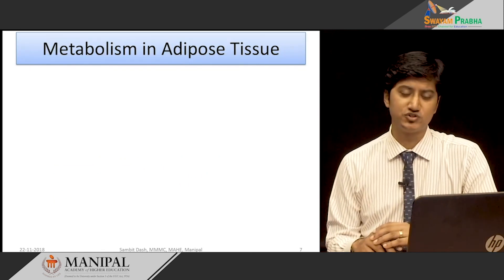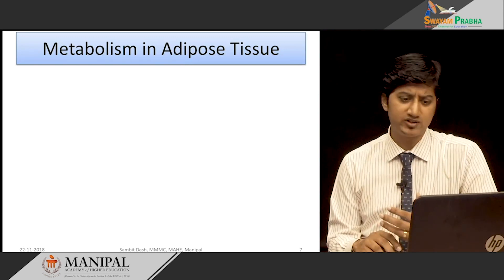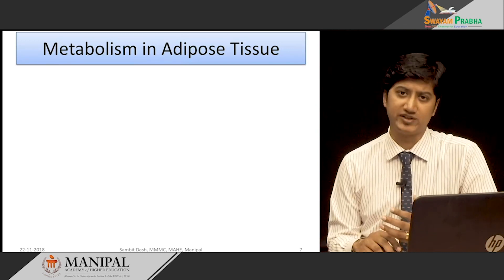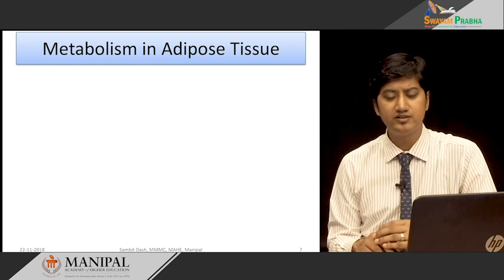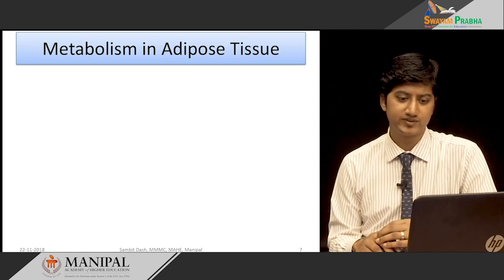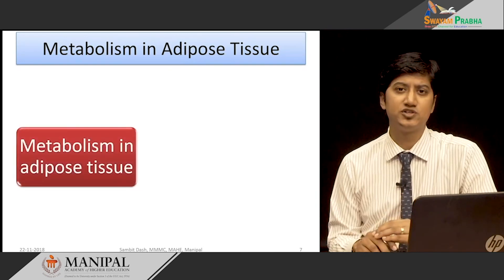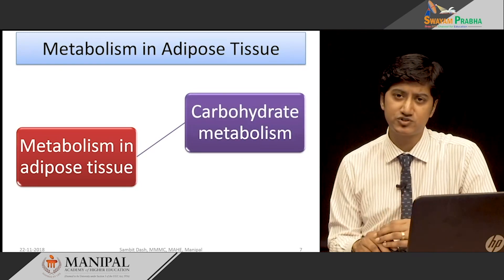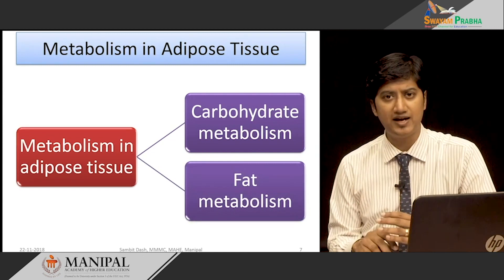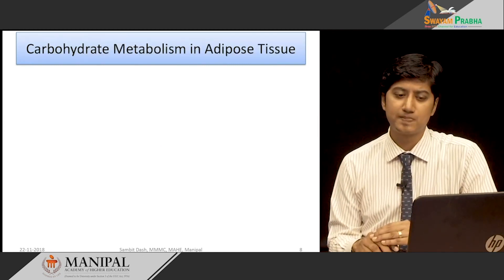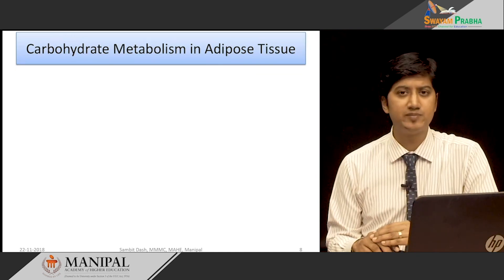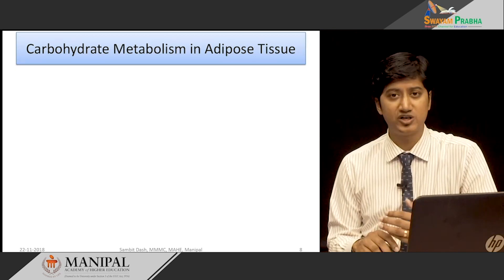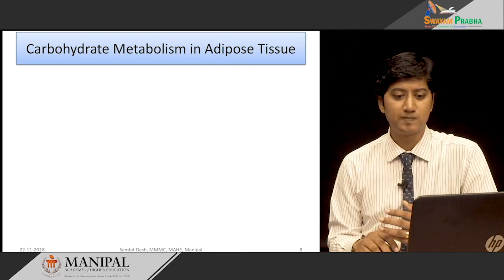Moving on to metabolism in adipose tissues: adipose tissue regulates metabolism in health and disease. They function to store fat majorly in times of excess energy availability, and they break down fat when energy is required. We shall study the metabolism in adipose tissue under two broad headings — carbohydrate metabolism and fat metabolism in adipose tissue. Three events occur in an absorptive state regarding glucose in adipose tissue.